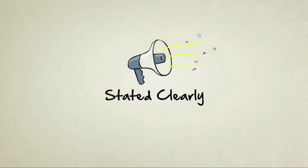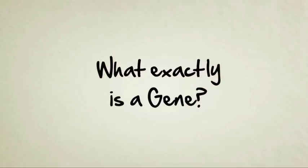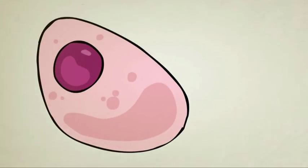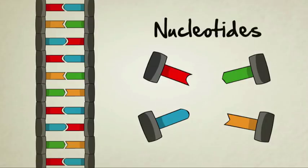Stated Clearly presents: What exactly is a gene? Each one of our cells contains 46 strands of DNA. A single strand is made of millions of particles called nucleotides, and these nucleotides come in four different types.